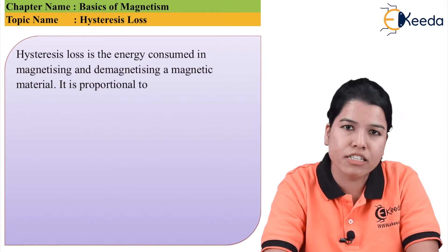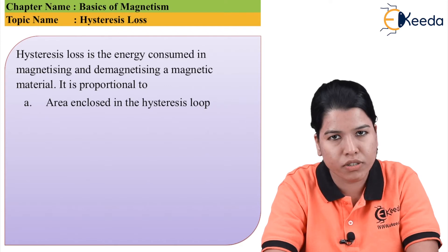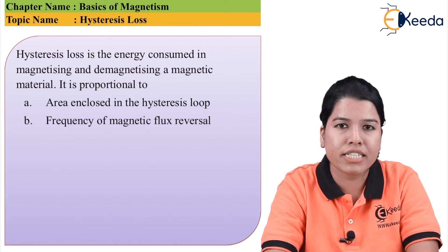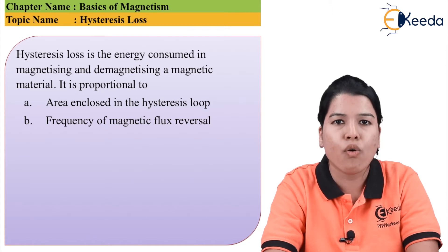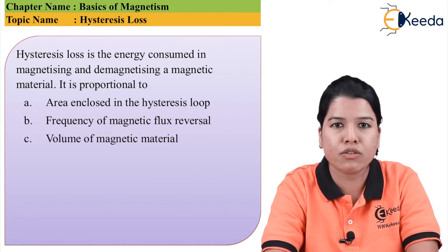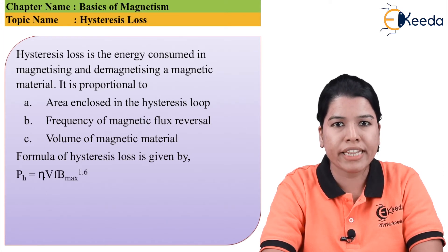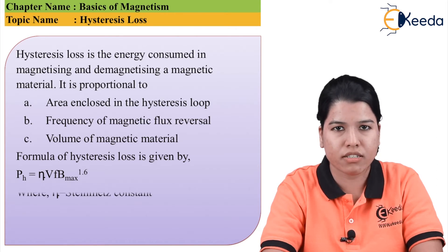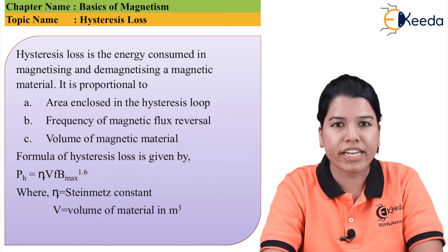The hysteresis loss is proportional to: the area of the hysteresis loop, the frequency of flux reversal, and the volume of the material. Its formula is given by: pH = η × V × f × Bmax raised to the power 1.6, where η is the Steinmetz constant and V is the volume of the material.